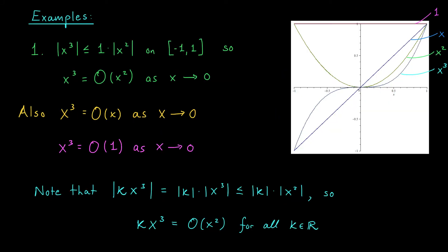For our first example, consider the function F of X equals X cubed, whose graph is shown here in blue. Notice that near X equals zero, X cubed is always less than or equal to X squared, the graph shown in green. In fact, even on the negative X axis, if you imagine taking the absolute value of your cubic, causing the graph to flip up, it's still going to lie underneath Y equals X squared. So therefore, we can say that the absolute value of X cubed is less than or equal to a constant — in this case one — times the absolute value of X squared. That holds for all X values on the interval minus one to one, and in particular near the origin. So according to our definition of big O, we can say that X cubed is of order X squared as X approaches zero.